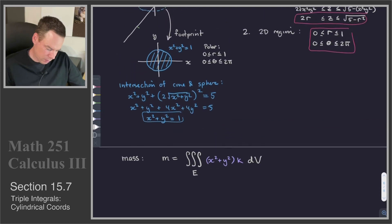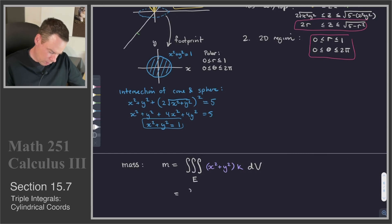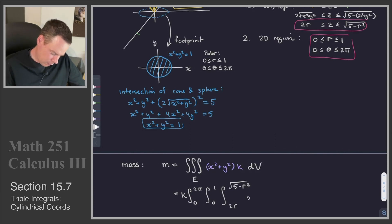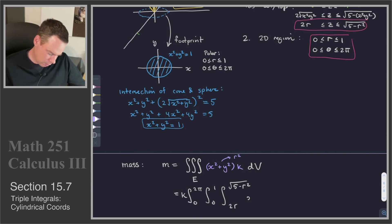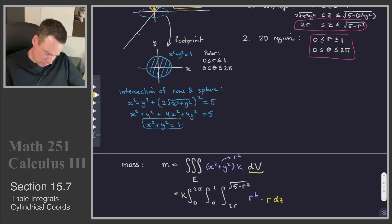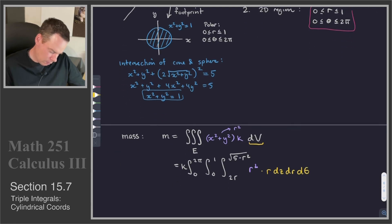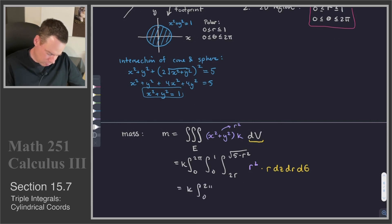Converting to cylindrical coordinates, x squared plus y squared becomes r squared, and the volume element dV becomes r dz dr dθ. So the integrand is k times r squared times r, which is k times r cubed. The full integral is k times the integral from 0 to 2π, the integral from 0 to 1, the integral from 2r to the square root of 5 minus r squared, of r cubed dz dr dθ.